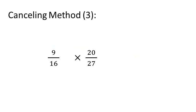When using the cancellation method in this question, 9 over 16 times 20 over 27, first check the numerators and denominators.